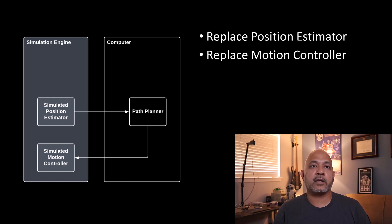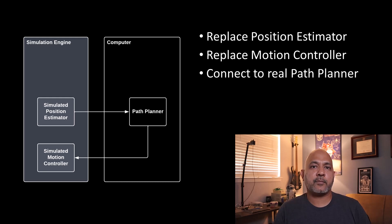So maybe we need to replace the motion controller part such that when the path planner produces some output, we are actually impacting the simulated position estimation.